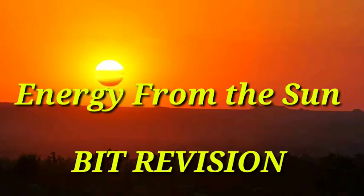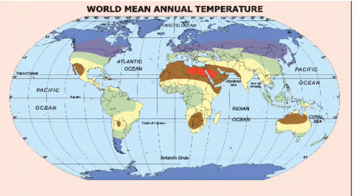Now you will learn about lesson two: energy from the sun — bit revision. Look at this picture — it is information skills related. Look at this picture and answer the questions. You can observe how many continents are there. Yes, seven continents are there.